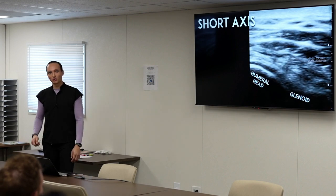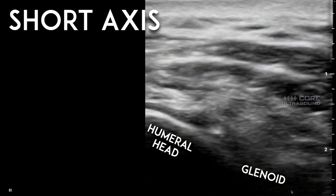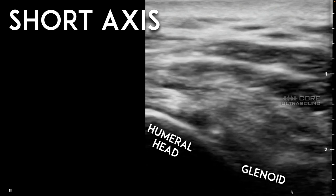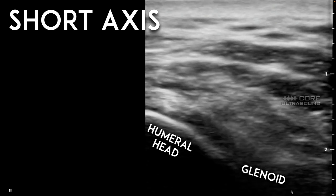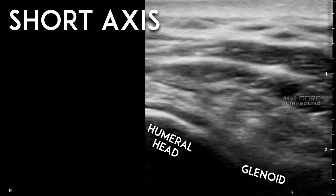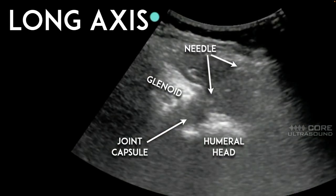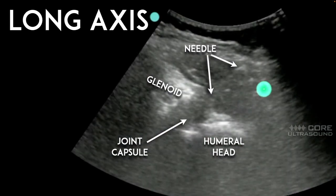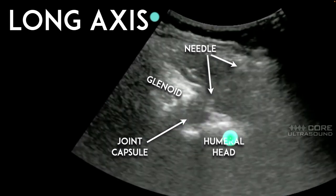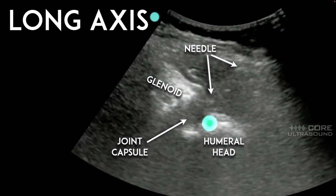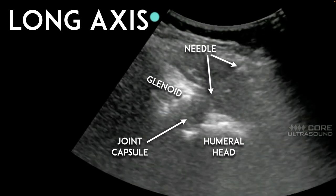In the short axis approach you can see the humeral head and the glenoid — and right there is the needle tip as I push anesthetic in, causing the joint space to expand slightly. In the long axis approach you can also see the needle entering the joint. This shows a dislocated humerus with a spinal needle injecting directly into the joint to facilitate relocation.